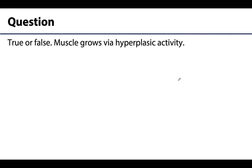Our question for this video is very big picture — something I definitely want you to take away. True or false: muscle grows via hyperplastic activity. So, is this true or false? The answer is false. Muscles grow through hypertrophy, not hyperplastic activity. Muscle fibers arise before birth through the fusion of myoblasts, and most cells will last a lifetime. If it were hyperplasia, that would be an increase in the number of muscle cells, but we have a pretty set amount after birth.